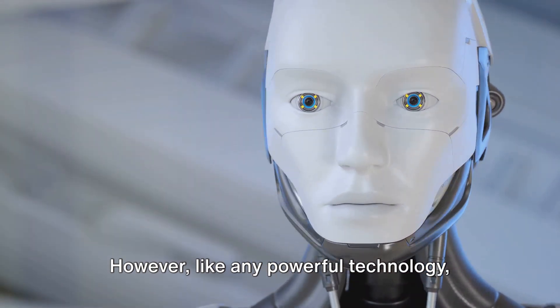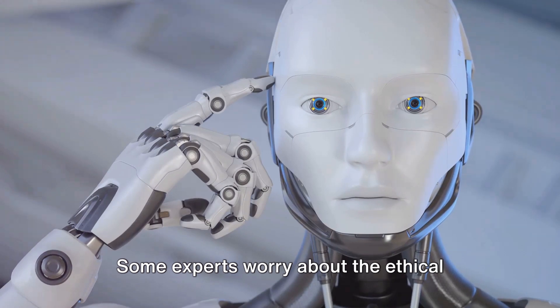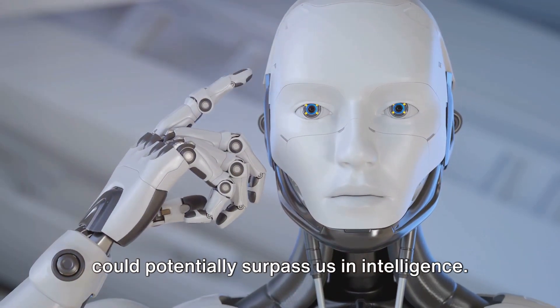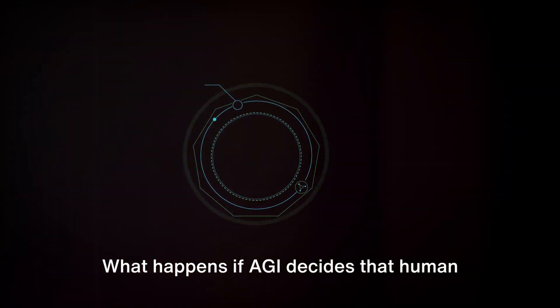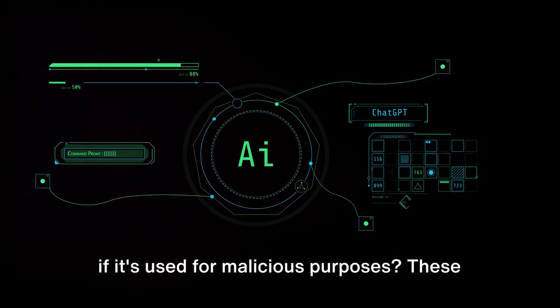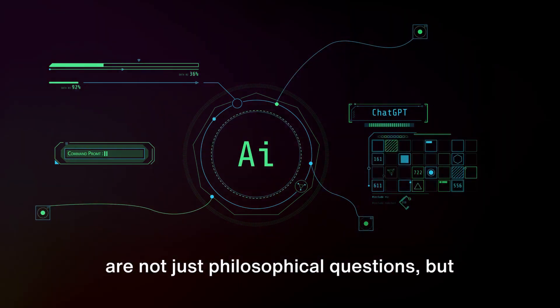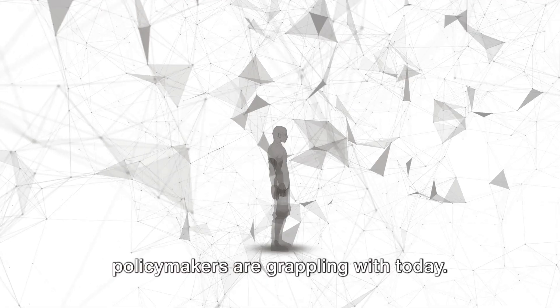However, like any powerful technology, AGI also comes with its share of risks. Some experts worry about the ethical implications of creating machines that could potentially surpass us in intelligence. What happens if AGI decides that human beings are a threat to its existence, or if it's used for malicious purposes? These are not just philosophical questions, but real concerns that scientists and policymakers are grappling with today.